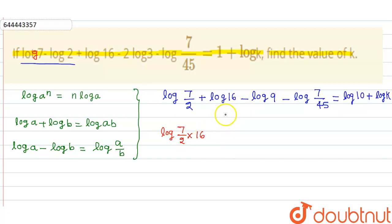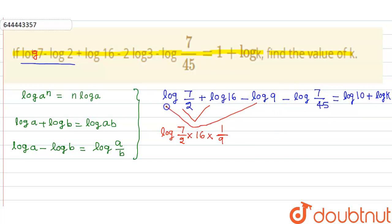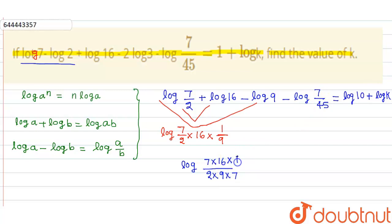Applying the third property, minus log 9 becomes a division by 9, giving log(7 × 16 / (2 × 9)). This is then divided further by log(7/45), so we get log[(7 × 16 × 45) / (2 × 9 × 7)], which equals log 10 plus log k.